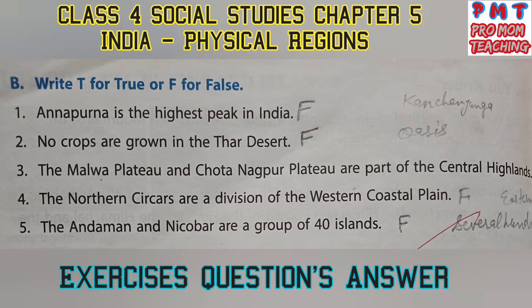Write T for true or F for false. First: Annapurna is the highest peak in India — it is false, because Kanchenjunga is the highest peak in India. Second: no crops are grown in the Thar desert — it is false, because at some places underground water comes up to the surface and there is usually some greenery around these patches of water. Such a place in a desert is called an oasis.